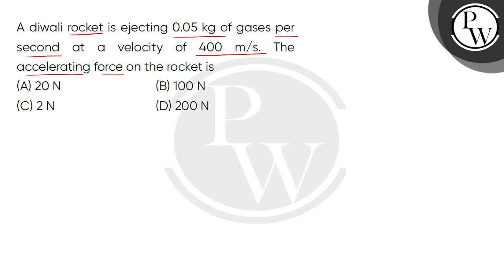Given for a Diwali rocket, the rate of ejecting gases, that is mass per unit time, is 0.05 kg per second, and its velocity is 400 m/s.